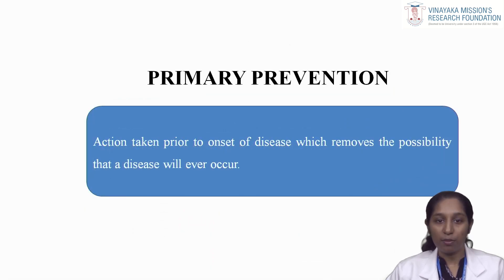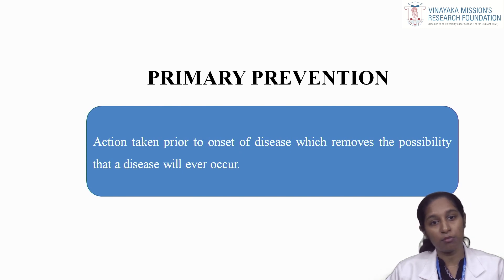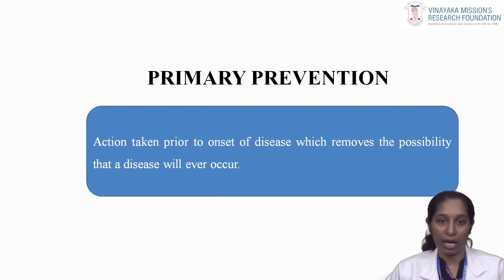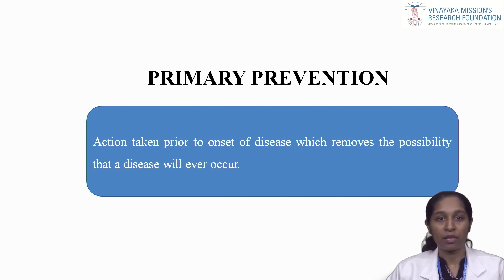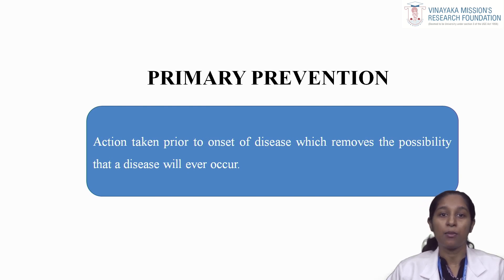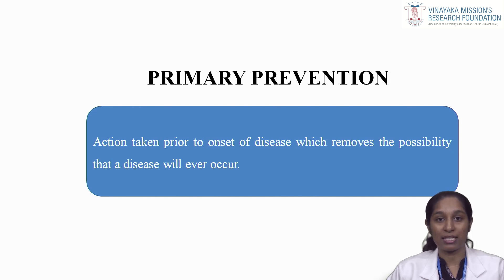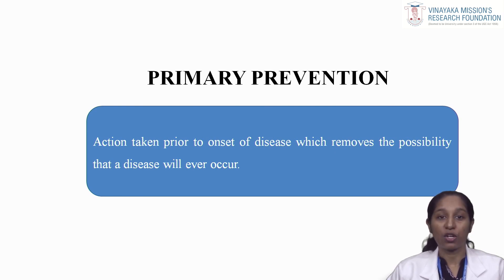Coming to primary prevention. Primary prevention is defined as the action taken prior to the onset of disease which removes the possibility that the disease will ever occur — that is, actions are taken before the onset of disease. As we discussed, primordial prevention deals with prevention of emergence of risk factors, whereas primary prevention deals with the elimination or modification of risk factors of disease, as the risk factors are already present. For example, giving tobacco cessation counselling to a person who smokes, but before the actual development of any lung disease, is primary prevention. Here, even though the lung disease has not developed, the risk factor — that is, smoking — is already present. So primary prevention signifies the intervention in the pre-pathogenesis phase of disease. It includes the concept of positive health, which encourages the achievement and maintenance of an acceptable level of health that will enable every individual to lead a socially and economically productive life.